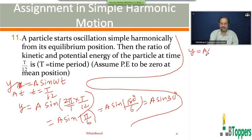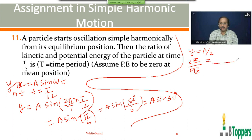To find the ratio of kinetic to potential energy at that instant: the potential energy of the particle when it is at distance y from mean position can be written as (1/2)K·y², and the kinetic energy can be written as (1/2)K(A² minus y²). The factor (1/2)K cancels. Substituting y equal to A/2, we compute both numerator and denominator.